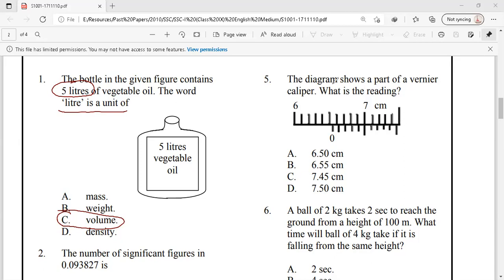Let's solve question number 5. The diagram shows a part of a Vernier Caliper and what is the reading. So, let's calculate the reading. If we look at 0, this 0 describes the main scale. That is 6.5. This is our main scale.